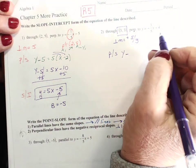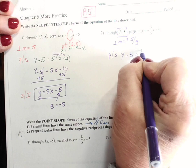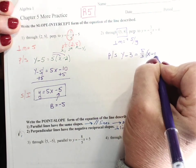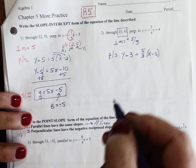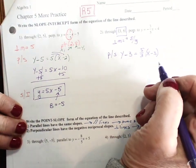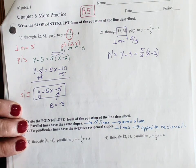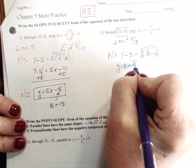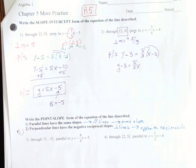y minus y1, 3, equals 5 thirds, x minus x1. And so now we have to distribute, and if you're not good with fractions, then feel free to use a calculator. This is not going to be a test of your arithmetic skills. So we're going to distribute this. y minus 3 equals 5 thirds x. I multiply these two numbers.